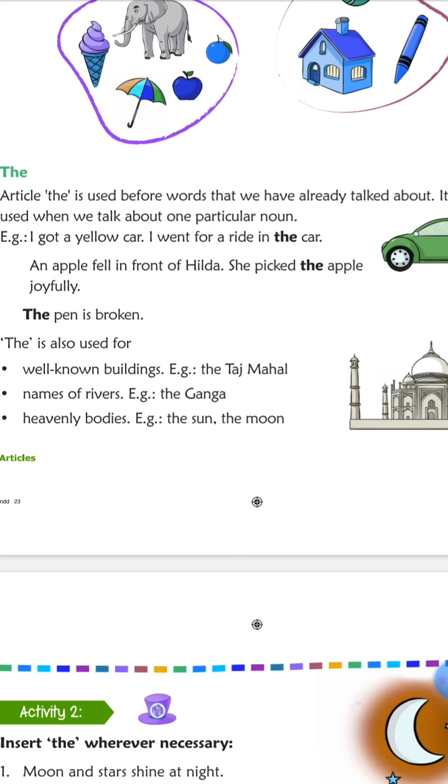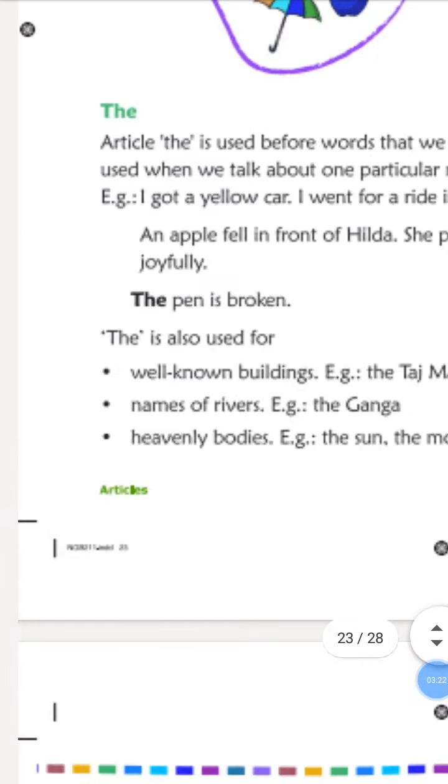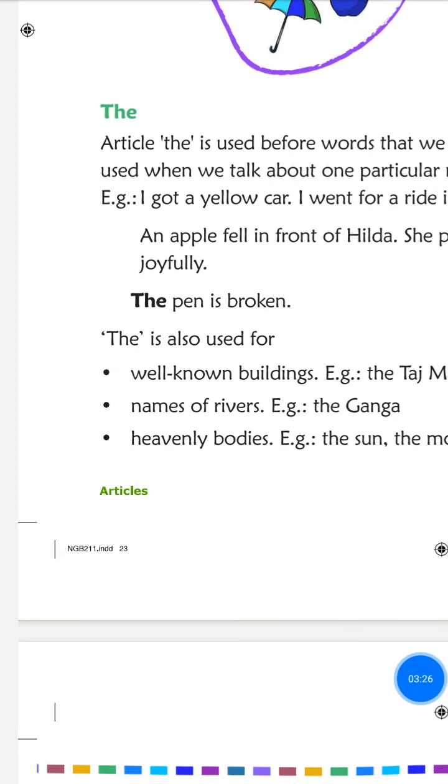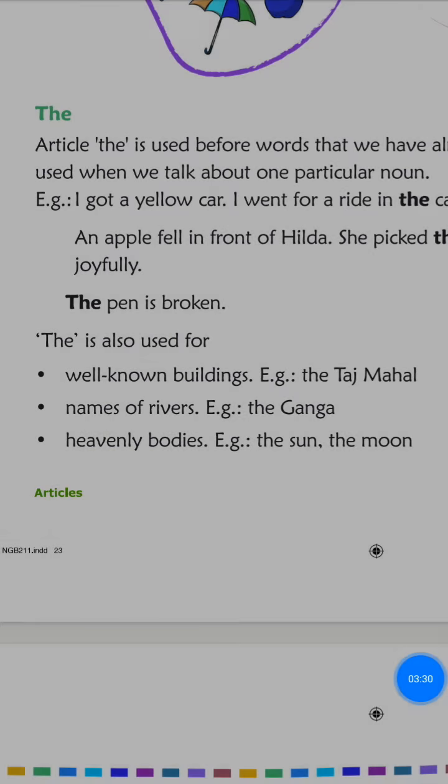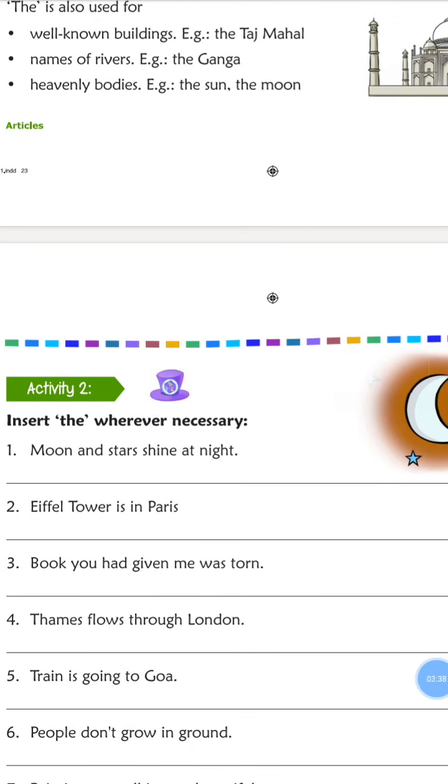'The' is also used for words that we have already talked about. This means when we talk about one thing first, and then we talk about it again. For example, a car, then the car. 'The' is also used for well-known buildings, monuments, rivers, and heavenly bodies just like sun and moon. We can say that these are only one thing, very famous and very old.